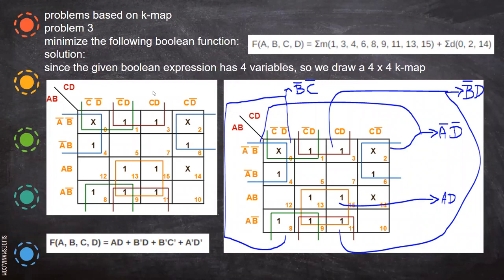Now we'll take another K-map problem. Here we consider the don't care condition also. These are all the sum of products and these are all the positions in which you have to substitute one. Here it is given a summation D — this is the way you represent the don't care conditions. So in those places you substitute X. Now we try to form the maximum groups.